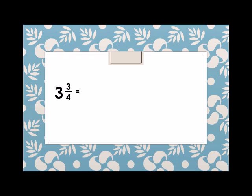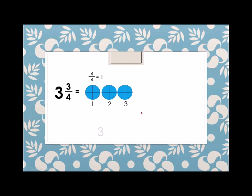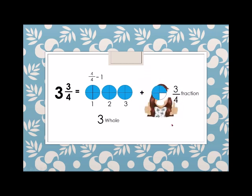Next, let's rewrite some fractions. We have three and three fourths. How many whole numbers? One, two, three — each circle has four parts, so it is four over four, which is equivalent to one. So we have three whole plus three fourths — that's our fraction.